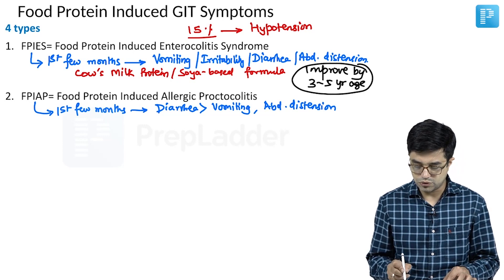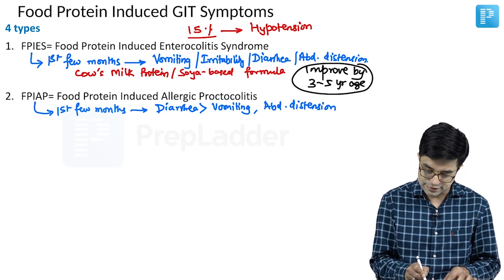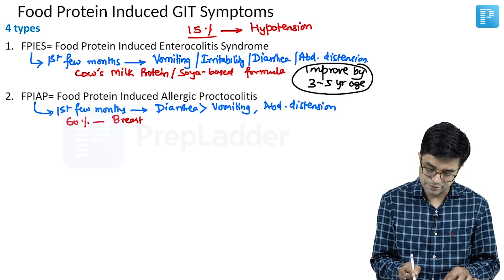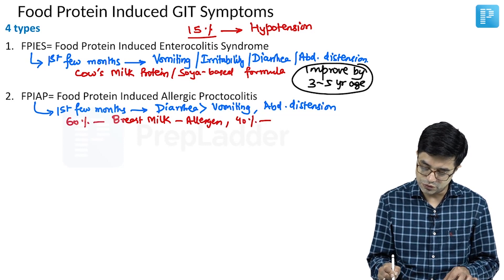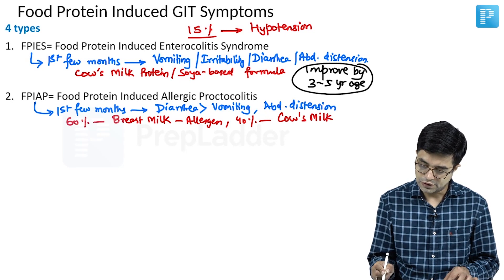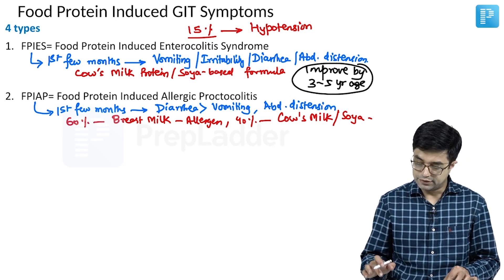In this kind of proctocolitis, it is found that in 60 percent of cases the allergen is breast milk proteins — breast milk is the allergy. Whereas in the remaining 40 percent, it is either due to cow's milk protein or soya based formulas, as we saw in the FPIES category.